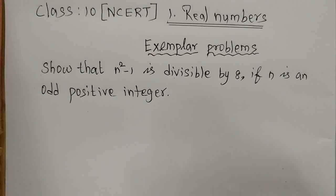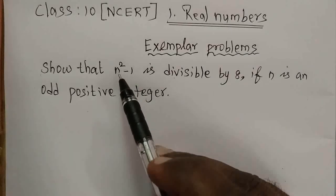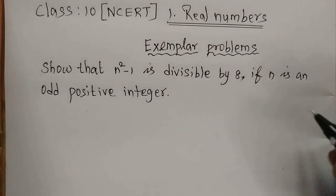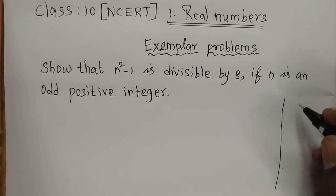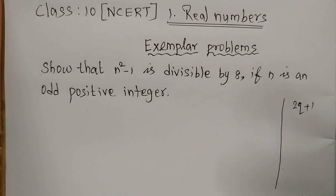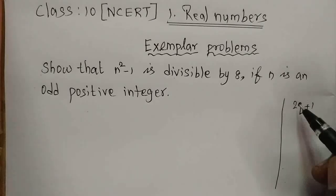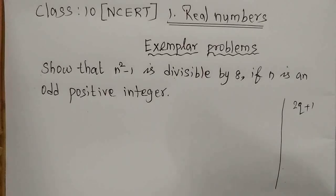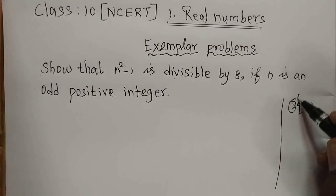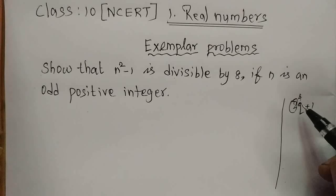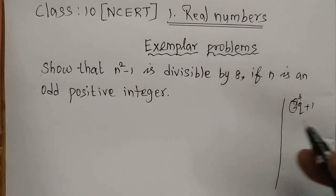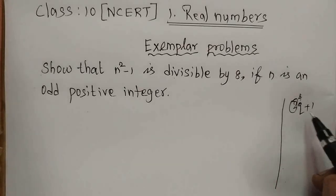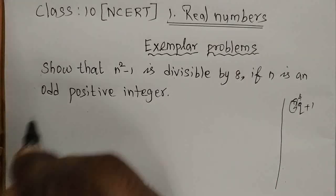We need to take a suitable odd positive integer. For n², divisible by 8 — if we use 2q+1 and square it, we get 4, which is not exactly divisible by 8. But if we use 4q+1, squaring gives 16, which is definitely divisible by 8 two times. That's why we take 4q+1.